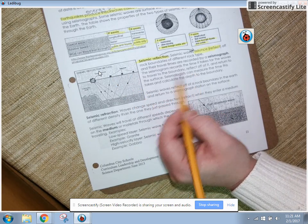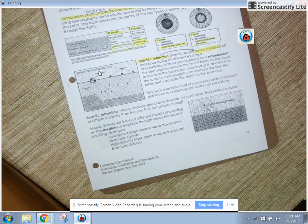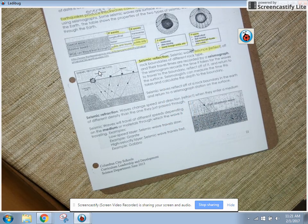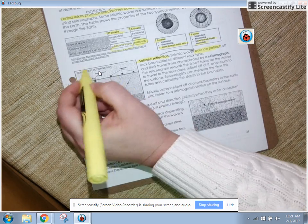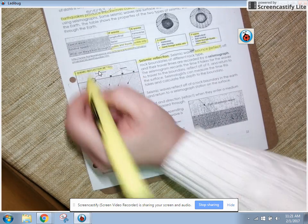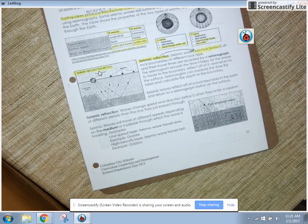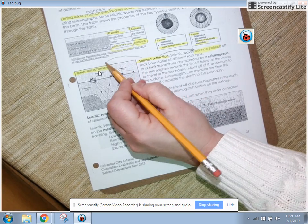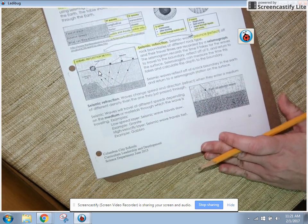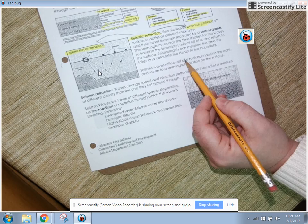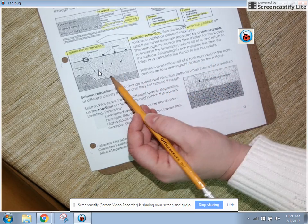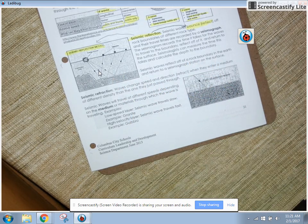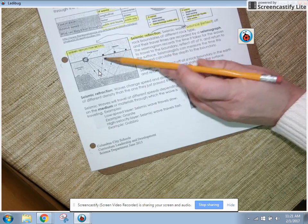And then these seismograph stations record that. Seismologists can measure the time it takes and calculate the depth to the boundary. They've done those calculations for us in this activity, thankfully. But I am going to highlight that to point out that that is showing seismic reflection. Seismic waves reflect off of a rock boundary in the earth. Again, you can see that here and return to the seismograph stations on the surface.